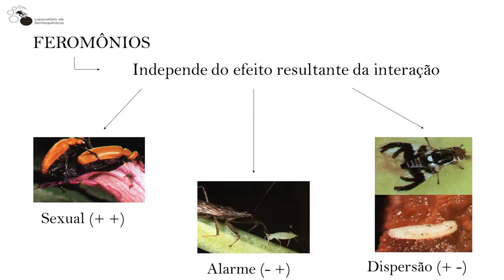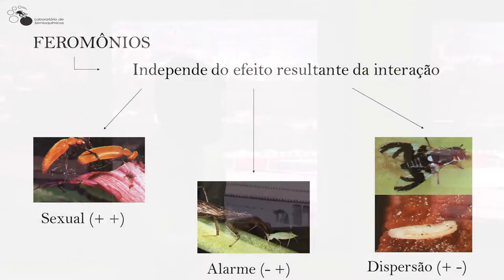Existe também o feromônio de dispersão, com efeito contrário. Esse exemplo clássico é uma mosca-da-goiaba: quando encontra o fruto para oviposição, deixa marcado com um feromônio de dispersão para que outra fêmea da mesma espécie saiba que aquela fruta já está ovipositada e parta para outra fruta, aumentando as chances de sobrevivência da espécie. Mesmo que quem recebe não seja beneficiado, como são interações intraespecíficas, são sempre chamados de feromônio.